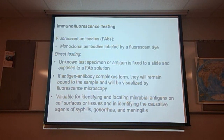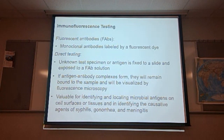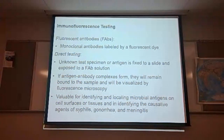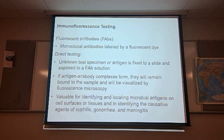Fluorescent antibody testing, or FAB, looks for monoclonal antibodies that have been labeled with a fluorescent dye. In direct testing, an unknown test specimen or antigen is fixed to a slide and exposed to these fluorescent antibody solutions. If an antigen-antibody complex is formed, they remain bound to the sample and can be visualized using fluorescent microscopy. This is a valuable technique for identifying microbial antigens on cell surfaces or tissues, and for identifying causative agents of syphilis, gonorrhea, and meningitis.